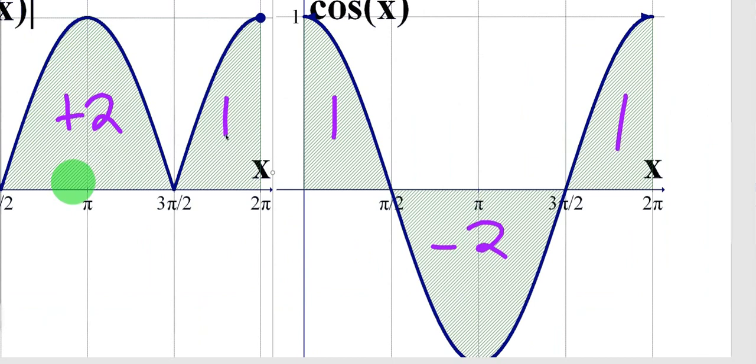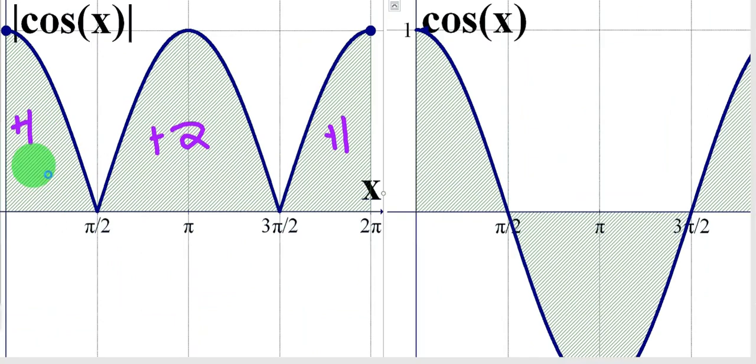When we add all three of these pieces up, let's move over here if we can. When we add all these positive pieces up, 1, 2, and 1, we get positive 4,